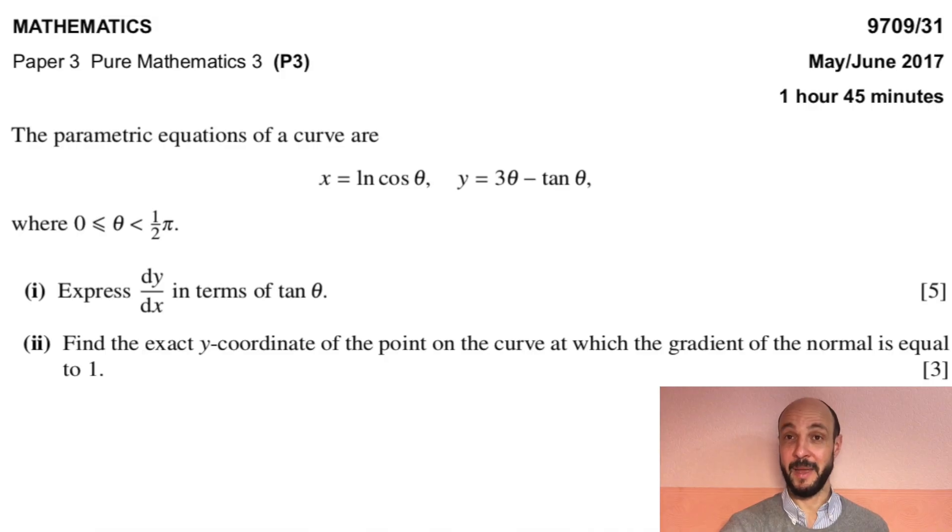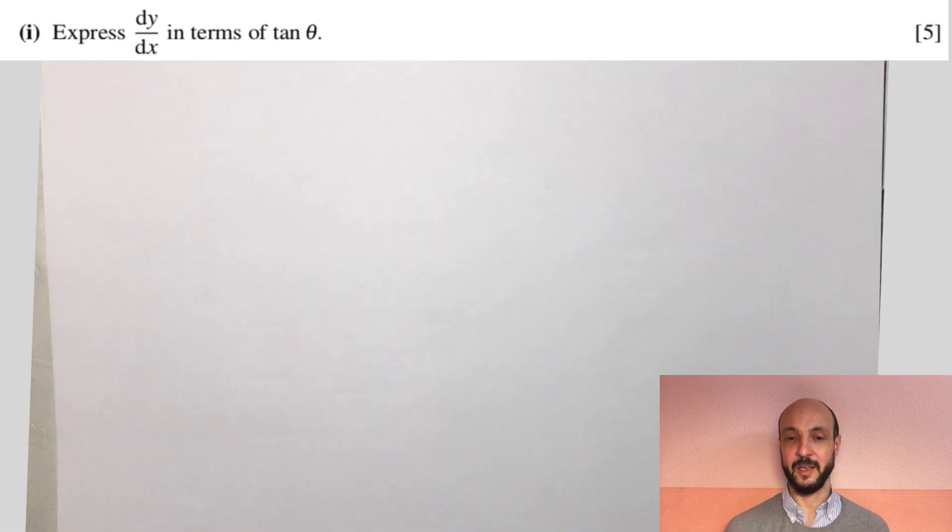So we'll start by reading through the question. The parametric equations of a curve are x equals the natural logarithm of cosine theta, y equals 3 theta minus tan theta, where 0 is less than or equal to theta is less than a half of pi. Part 1, express dy/dx in terms of tan theta. And part 2, find the exact y-coordinate of the point on the curve at which the gradient of the normal is equal to 1.